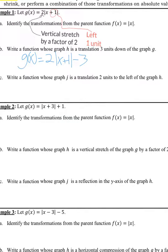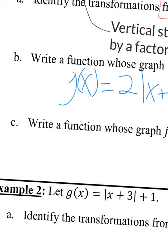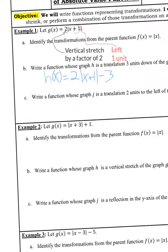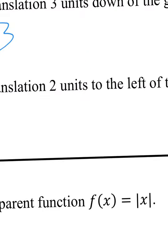For the last part, write a function whose graph J is a translation two units to the left of graph H. So we're going to look at the H of x function and translate it two units to the left. Two units to the left — do I plus two or minus two? Plus goes left and minus goes right, so I'm going to add two on the inside.